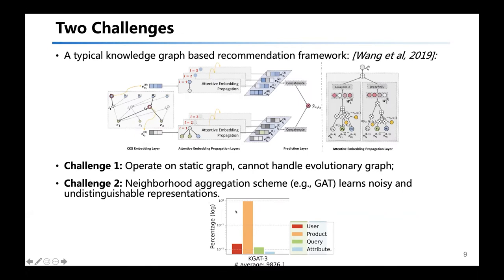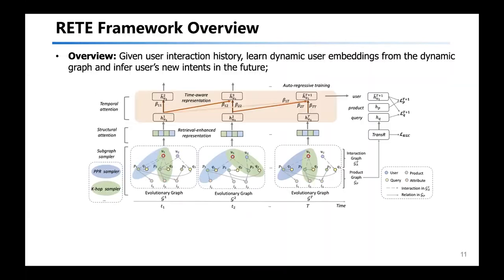This can be vividly shown in this bar graph, where we find that KGAT with three layers of GNN can integrate up to 9,000 nodes to represent each user, which introduces a large ratio of noise. So to overcome these two challenges at the same time, we propose the RATI framework in this paper.